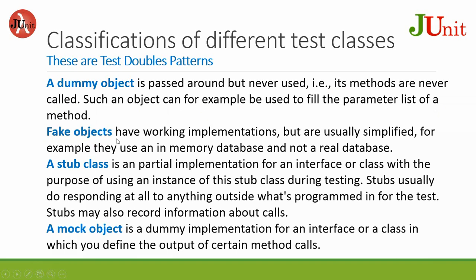Fake objects have working implementations but are usually simplified. For example, they use an in-memory database and not a real database. When you use fake objects, you are thinking of treating it like a real database but in fact it is not. A dummy has nothing inside — you just try to fill the parameter in but you don't get any data out, as long as the dummy object can work.